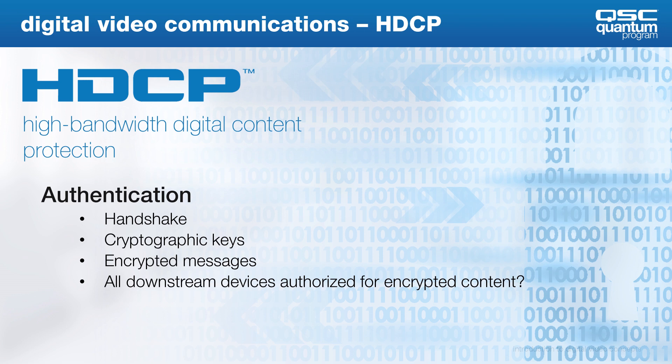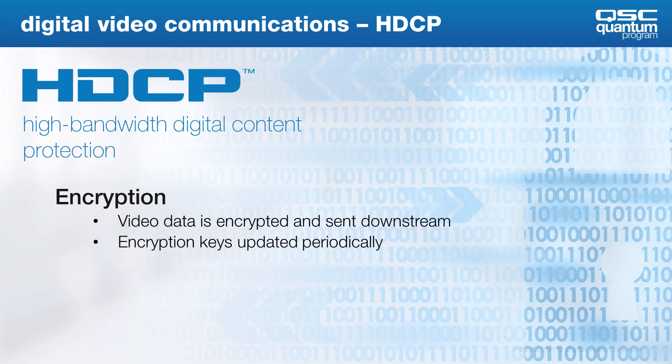All downstream devices must be authorized for encrypted content. Once the source device has determined that all downstream devices are HDCP compliant and the maximum number of devices has not been violated, encrypted content is then sent to all downstream devices. Encryption keys are periodically updated while devices are connected and sending content.